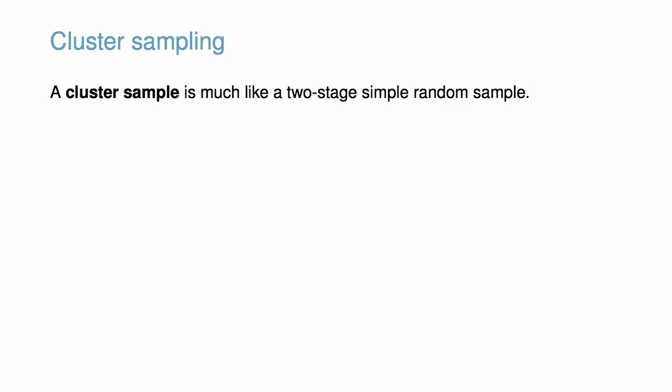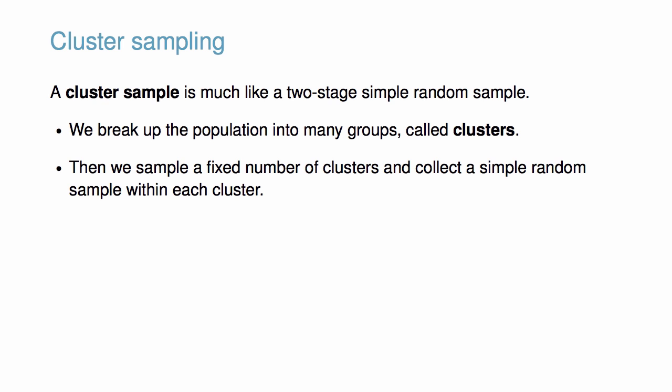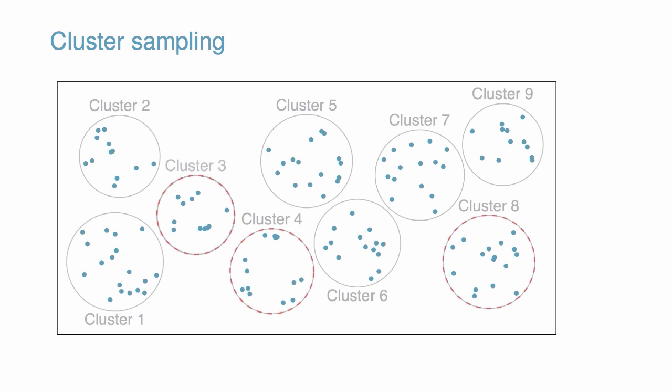The last type of sampling we'll consider is cluster sampling. A cluster sample is much like a two-stage simple random sample. First, we break up the population into many groups called clusters. Then we sample a fixed number of clusters and collect a simple random sample within each cluster. Sometimes cluster sampling can be a more economical random sampling technique than the alternatives. Notice that we sample randomly only from the selected clusters.